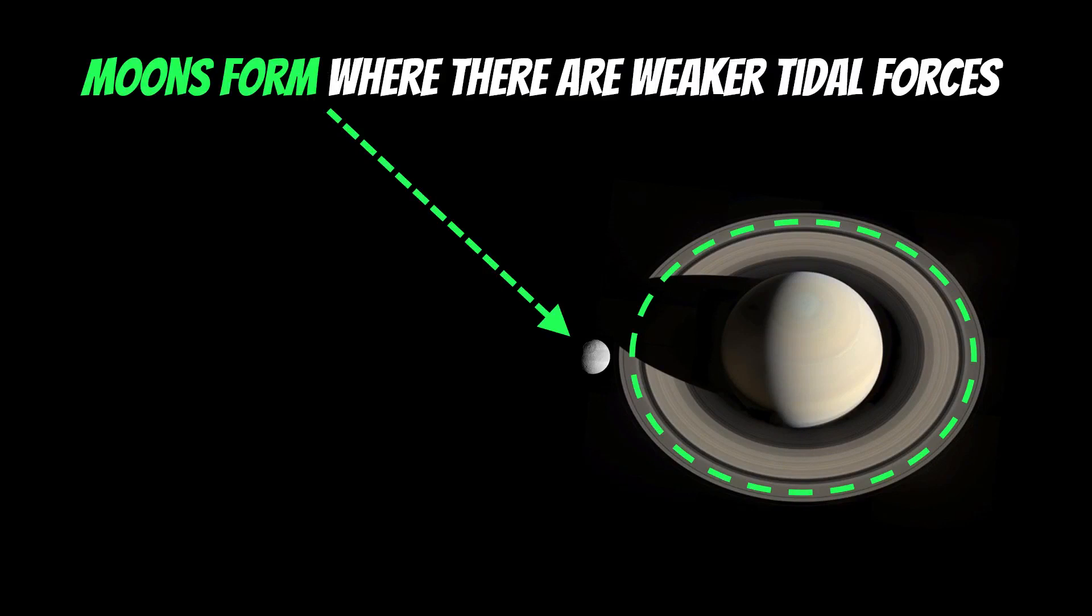Once that happens, those tides are much weaker. They're at a point where those ring particles can come together under their own gravitational attraction, and in time they grow into a moon. So you get a moon forming just on the ring edge, just outside of the Roche limit.